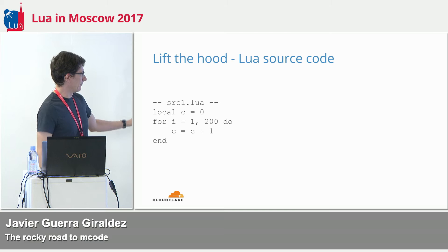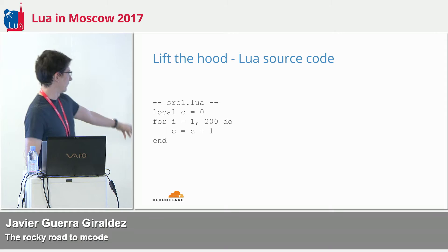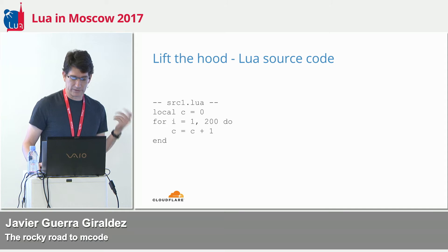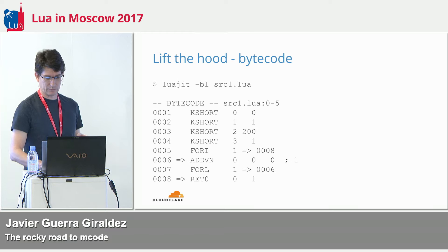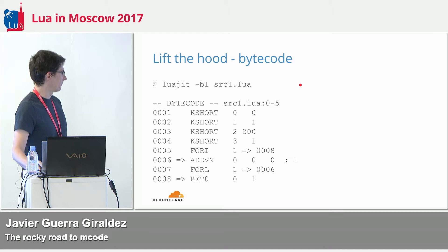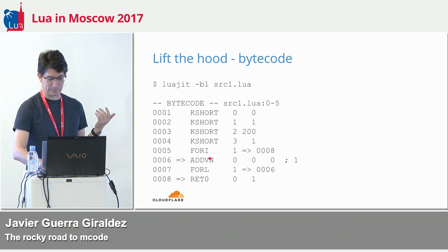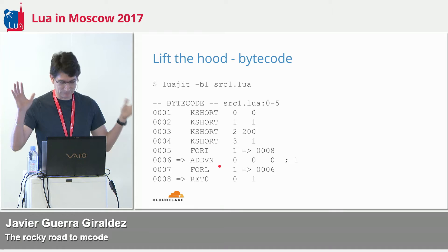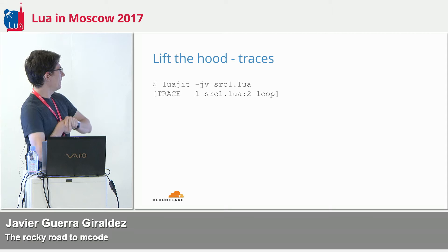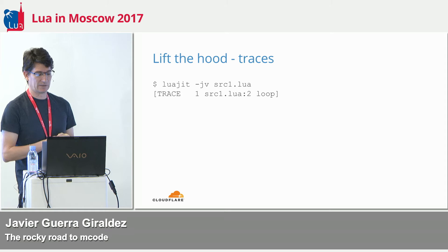This is the simplest Lua code that can actually get compiled in LuaJIT — just a loop with a counter inside and nothing else. What does LuaJIT do with this? First, we have the -bl option that shows the bytecode. It's mostly readable. There's some other parts, and this might be the loop, and there's an addition. And -jv is the verbose flag for the JIT compilation specifically, and it says we have a trace with a loop.